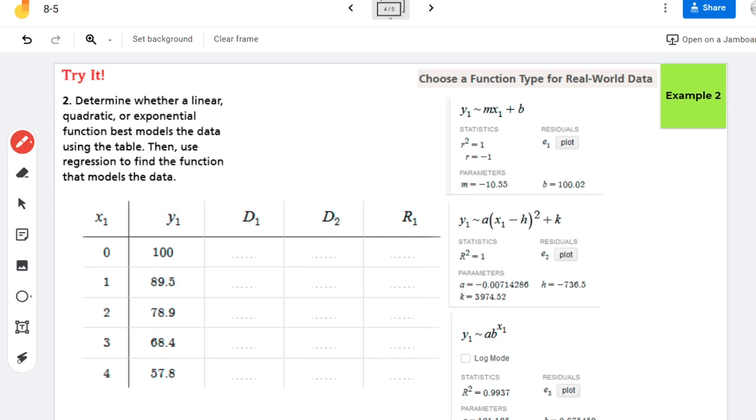All right, so remember when I'm finding my first difference, I'm taking the Y value and subtracting it with the Y value before it. So 89.5 minus 100, that gives me negative 10.5. 78.9 minus 89.5 is negative 10.6.